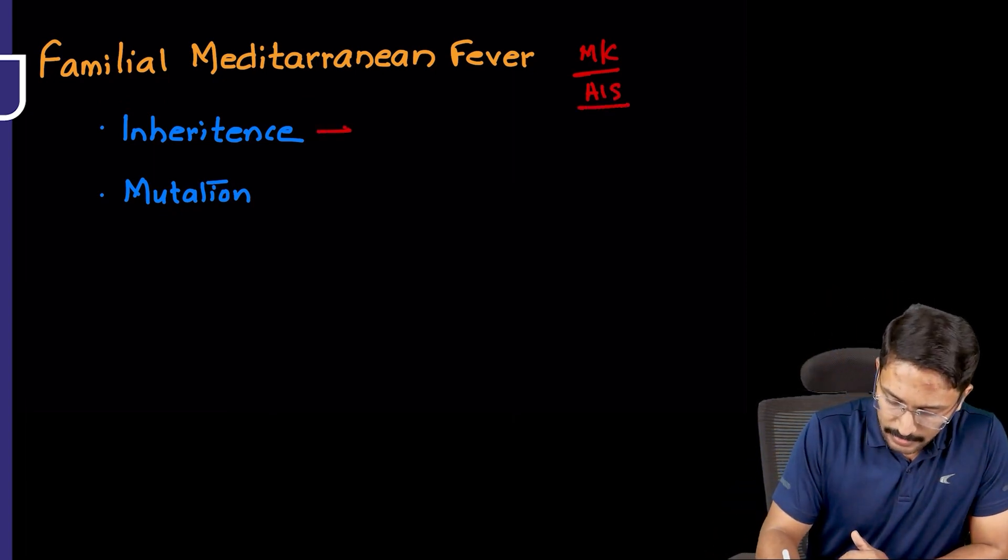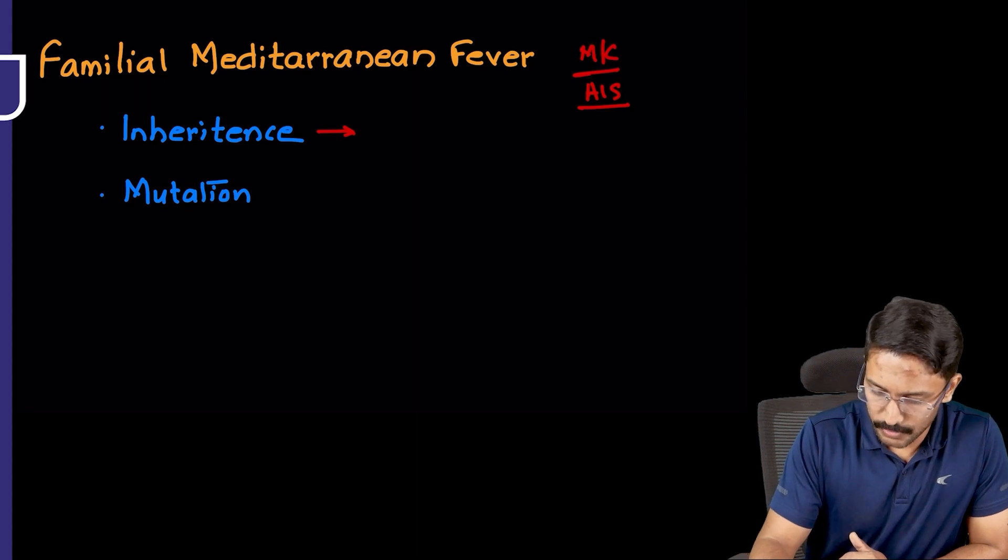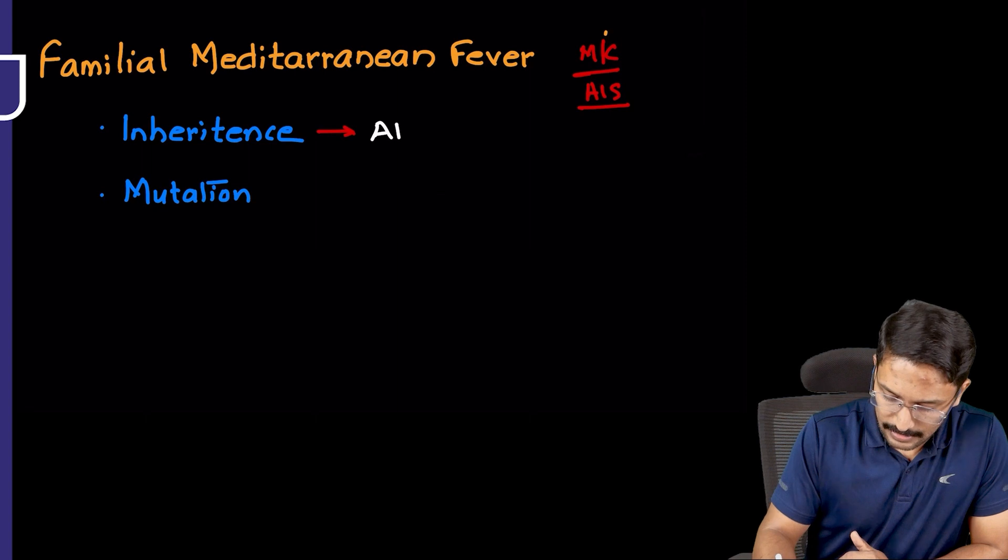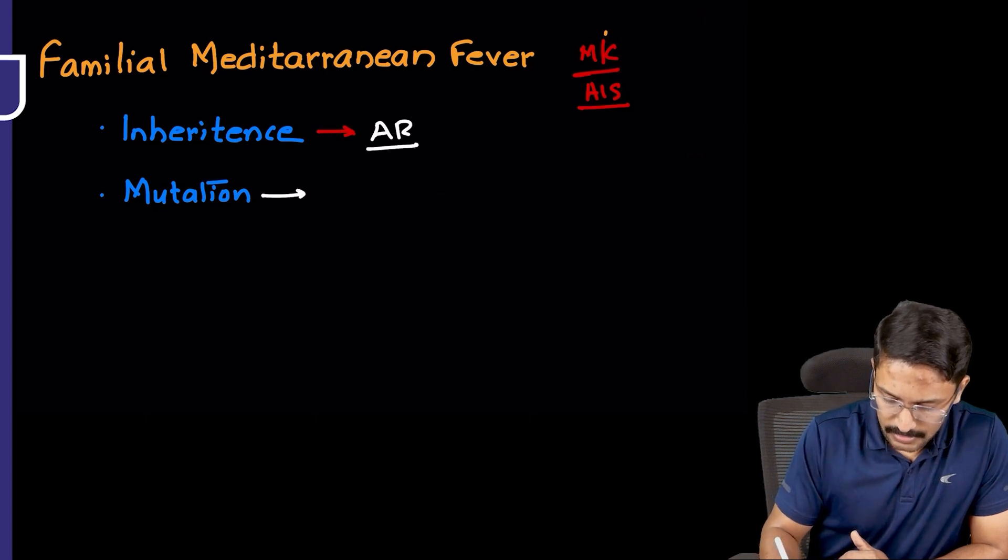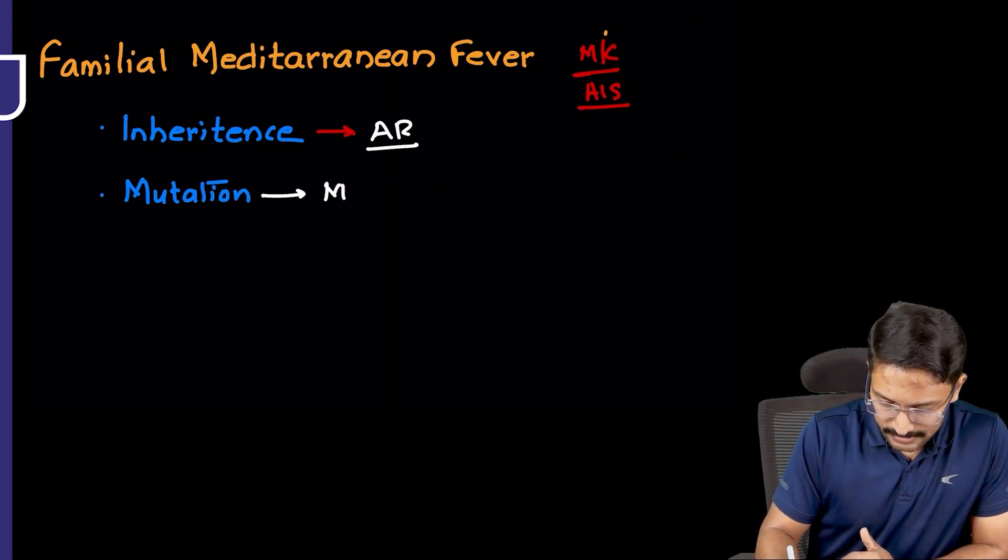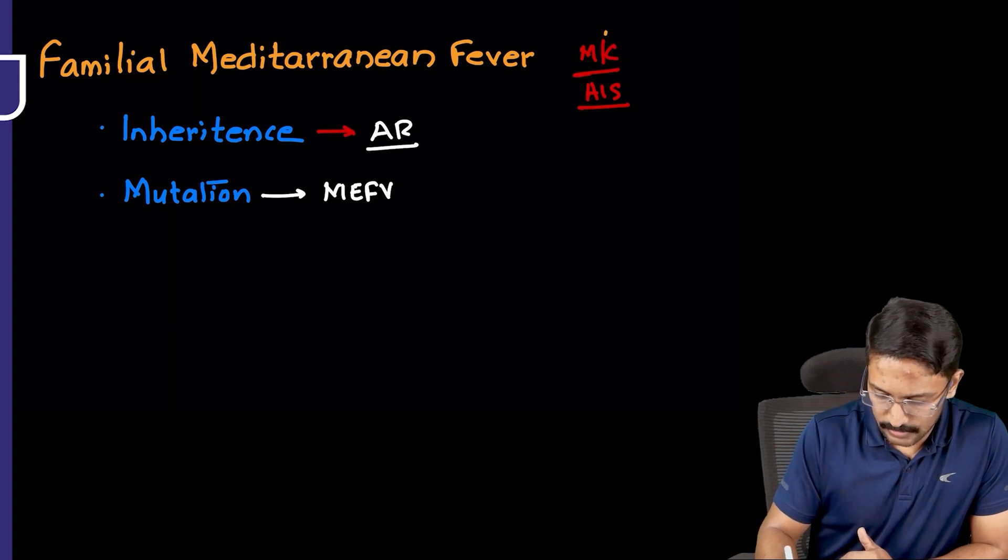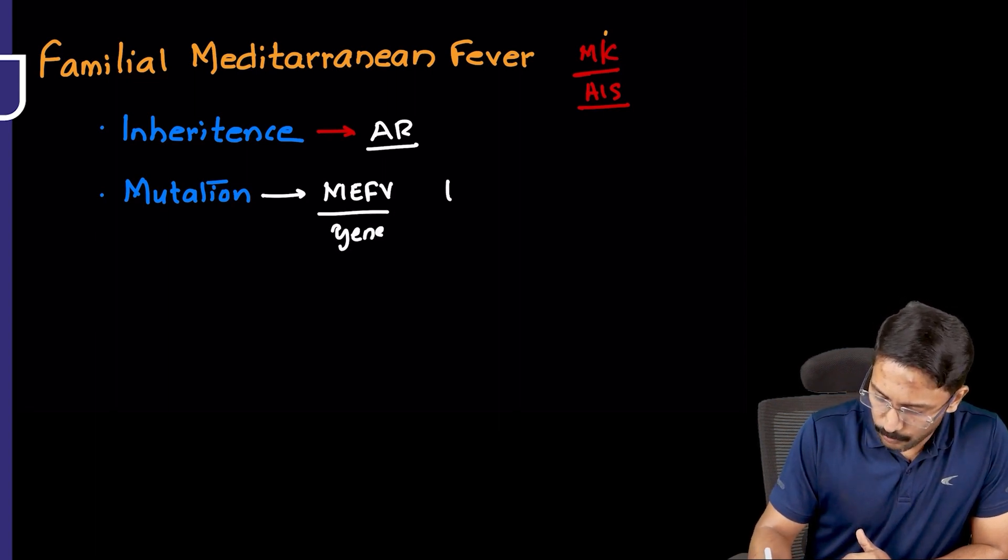We know that it is a Mendelian inheritance. We should definitely know whether it is autosomal dominant or recessive. It is autosomal recessive inheritance and the mutation that we see here is in a gene called MEFV, which codes for a protein known as pyrin.